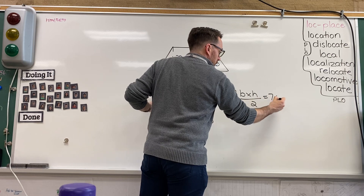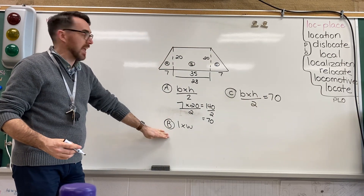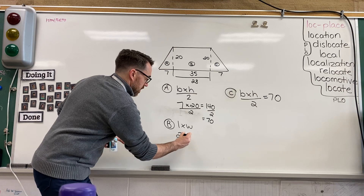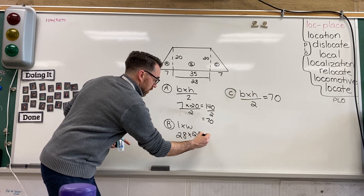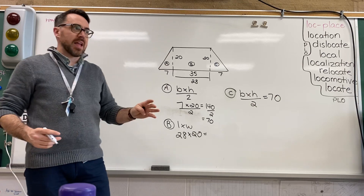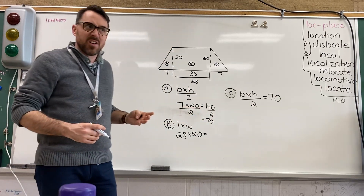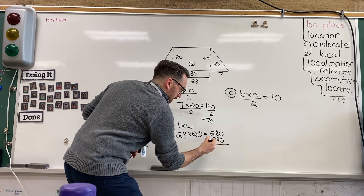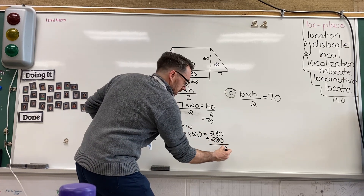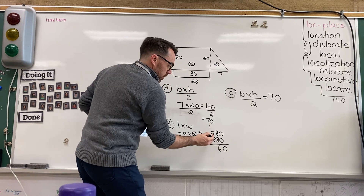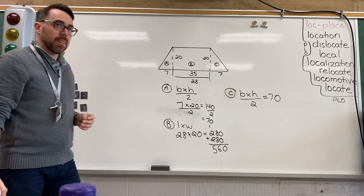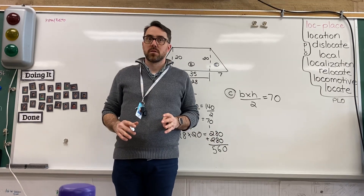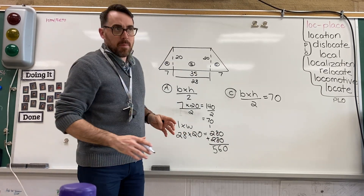I already know that C also equals 70. Now to do B: length times width. My numbers were 28 times 20. I might do this as 28 times 10, and 28 times 10 — that's easier. 28 times 10 is 280. Add them together: 0, 6, carry the 1, 2 and 2 is 4 plus 1 is 5 — so 560. Am I done? No, I'm not done.